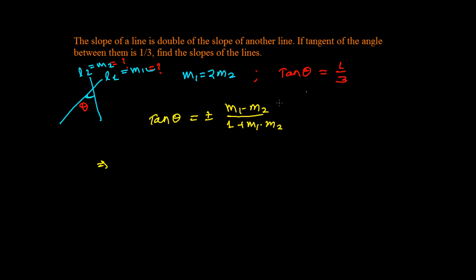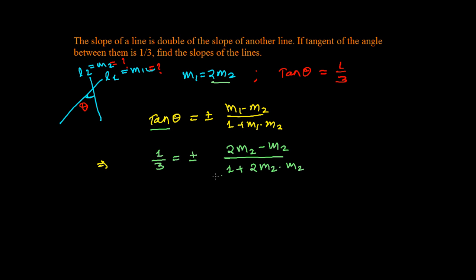Now let's substitute all the given values. tan(theta) = 1/3, and m1 = 2m2, so we put: 1/3 = ±(2m2 − m2) / (1 + 2m2·m2), which simplifies to 1/3 = ±m2 / (1 + 2m2²).